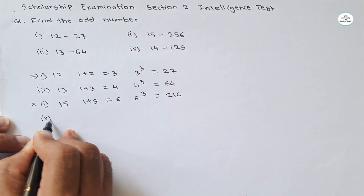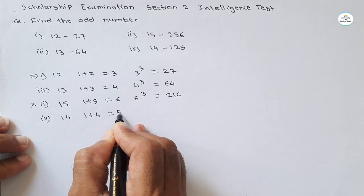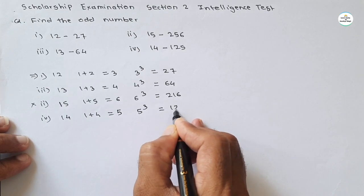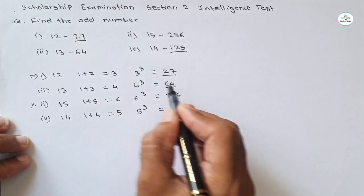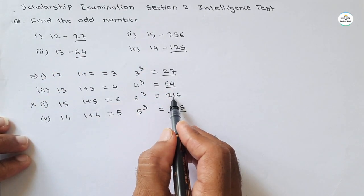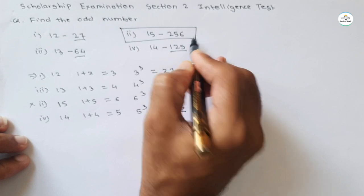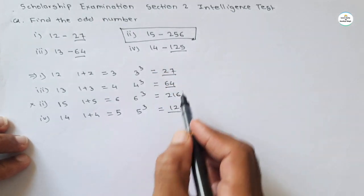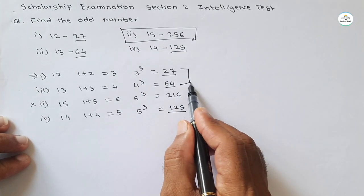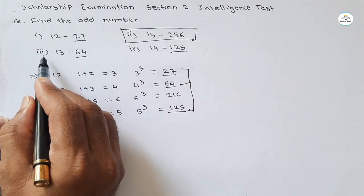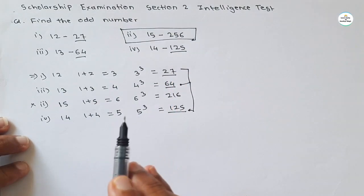For the fourth group, 14: 1 plus 4 equals 5, and 5 cubed is 125 — which matches. So the pattern holds for the first, third, and fourth groups: 27, 64, and 125 all match. But 216 does not match 256, so the second number — the group 15–256 — is the odd number.